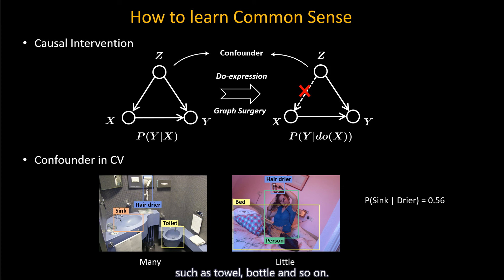After the causal intervention, the P(Y|do(X)) is lower, because the most common context is forced to be seen as fair as others. The detailed analysis can be reviewed in our paper.